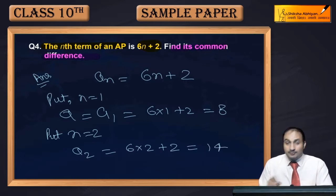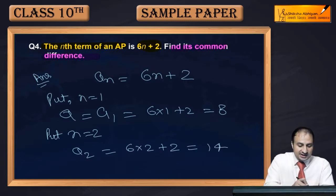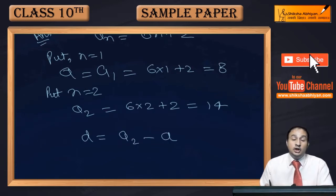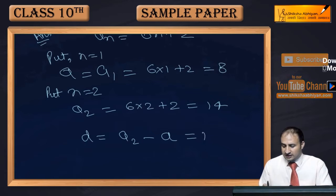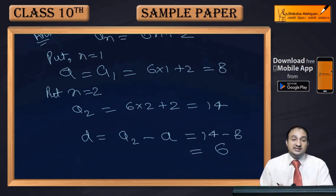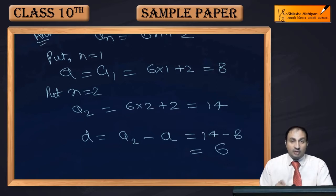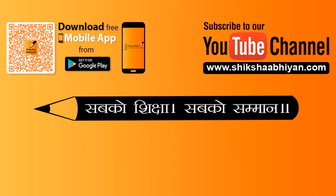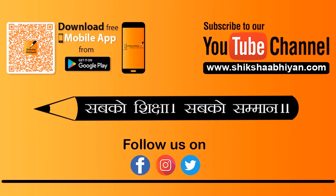The common difference is nothing but the second term minus the first term. So common difference d equals 14 minus 8, that is equal to 6. So the common difference we get is 6.